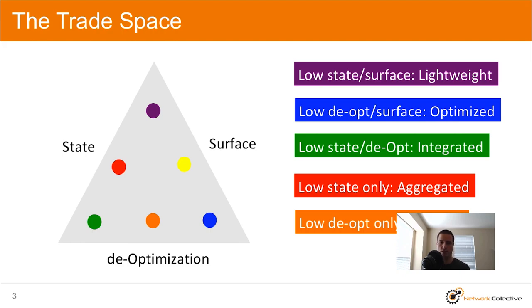The last one is yellow. I apologize if that's a little hard to see. It's on the right near the surface word. I'm calling this one decoupled because the surface is very low and the state and deoptimization are kind of midway between.